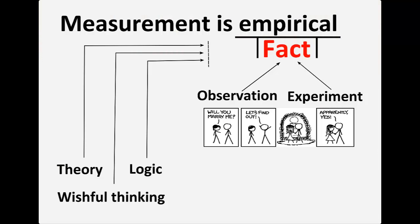Remember that measurement is by definition empirical. This means it is knowledge derived from observation or experimentation, and it is not based on theory, logic, or anything we are merely thinking. Although we all believe we are doing good work because we see the difference it makes in the lives of some of our beneficiaries, we are subjective. We don't always see things the way they really are and often struggle to see the whole picture. Showing something empirically basically means that you are scientifically and more objectively proving that you are achieving your outcomes.